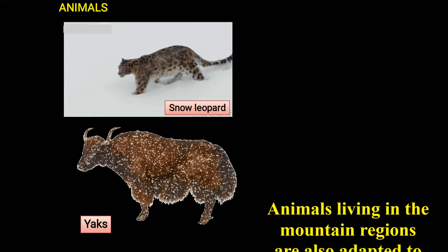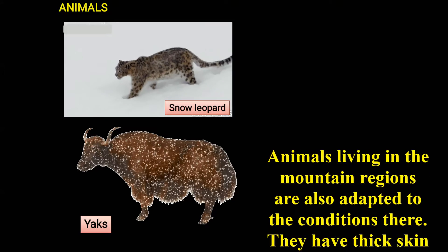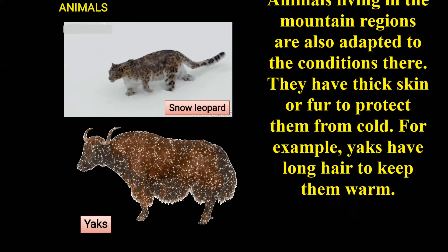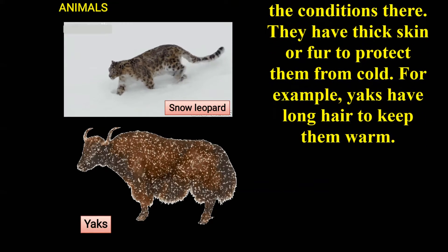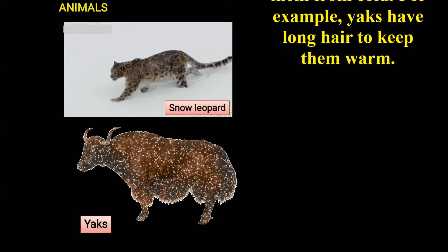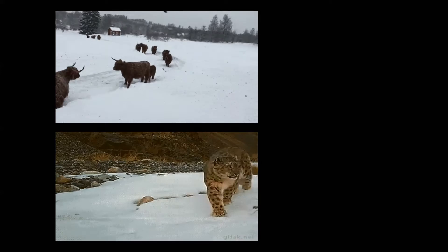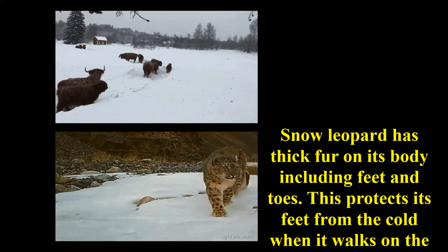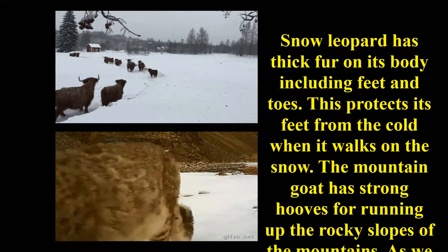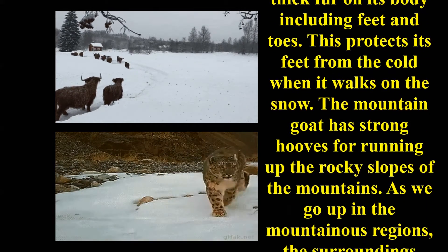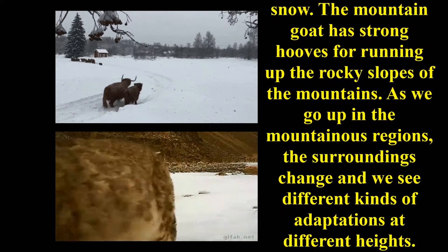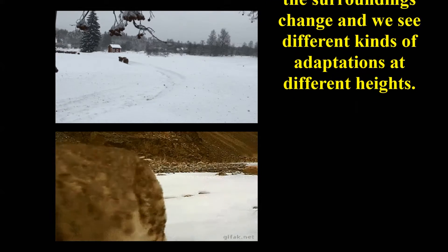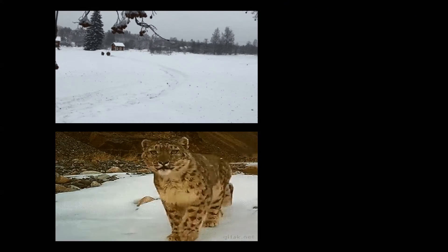Animals living in mountain regions are adapted to cold conditions — they have thick skin or fur to protect them. Yaks have long hair to keep them warm. Snow leopards have thick fur on their body including feet and toes, protecting them when walking on snow. Mountain goats have strong hooves for running up rocky slopes. As we go higher in mountain regions, surroundings change and we see different kinds of adaptations at different heights.